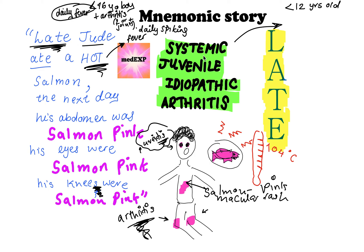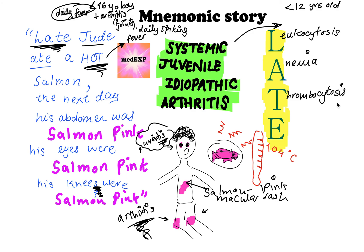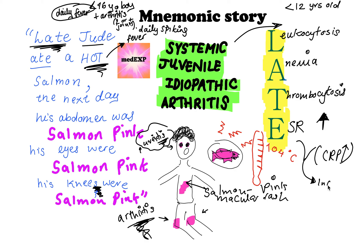Now, why is Jude 'late'? Because he has these findings: L for leukocytosis, A for anemia, T for thrombocytosis, and E for a raised ESR — and also CRP. As I explained in my rheumatoid arthritis video, these lab values are indicators for inflammation.